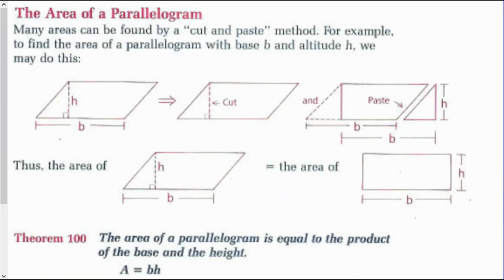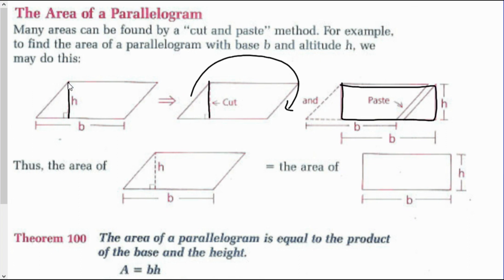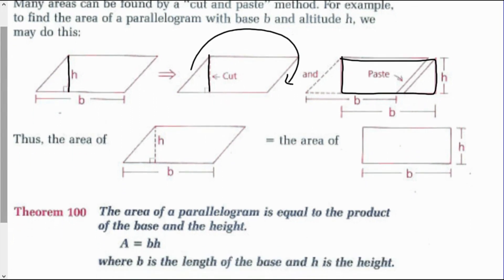The area of a parallelogram — many areas can be found by a cut-and-paste method. To find the area of a parallelogram with base B and altitude H, we can cut along the height and paste it on the other side, giving us a rectangle. We know the area of a rectangle is base times height. So Theorem 100 gives us: the area of a parallelogram equals the product of the base and the height, where B is the length of the base and H is the height. Remember, the base is always perpendicular to the height.